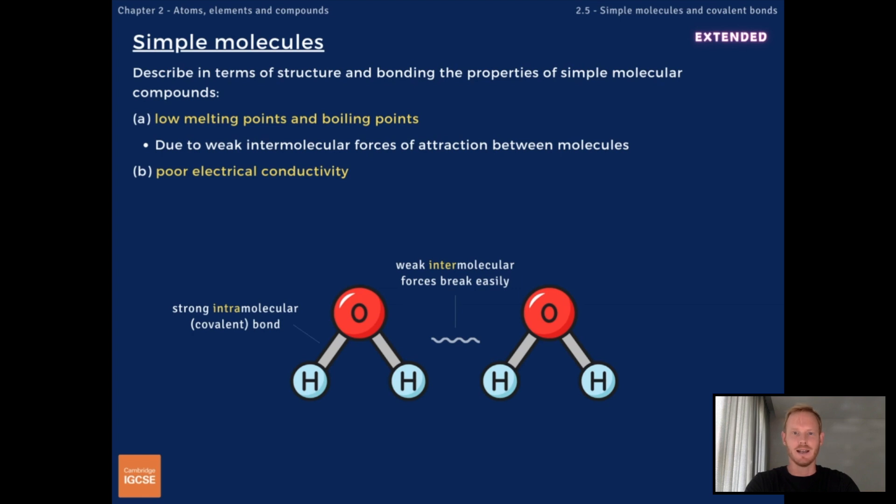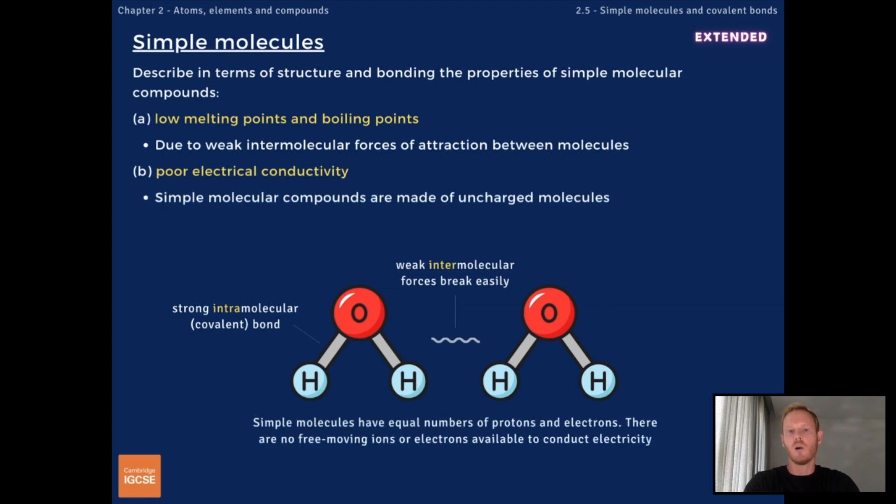These intermolecular forces are only present between simple molecules. They don't exist in ionic substances, metals, or substances with giant covalent structures. Simple molecular compounds are also poor conductors of electricity. Because no electrons are lost or gained when covalent bonds form, molecules all have the same number of protons and electrons and are therefore uncharged. Unlike with ionic or metallic substances, there are no free-moving ions or electrons to carry a charge.